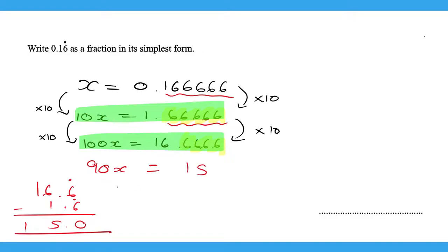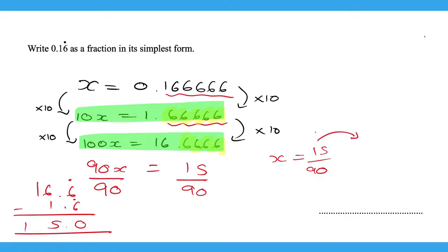To get x by itself, we divide by 90 on both sides and get x equal to 15/90. The question says give your answer in its simplest form, so we simplify: divide the numerator and denominator by 15. That gives us 1/6. So 0.16̄ as a fraction is 1/6.